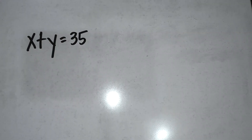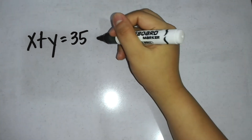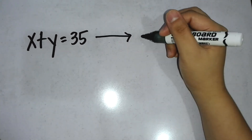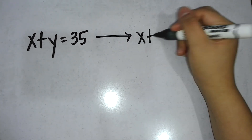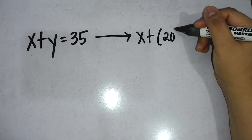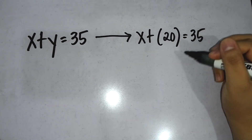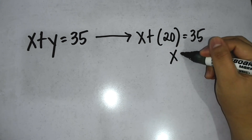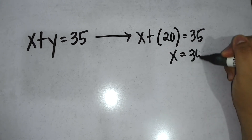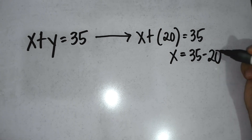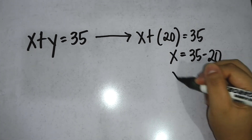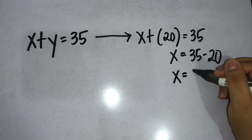For step 4, substitute the known value found in step 3 into one of the original equations to solve for the other variable. So, x plus 20 is equal to 35. So, x is equal to 35 minus 20. The answer is x is equal to 15.